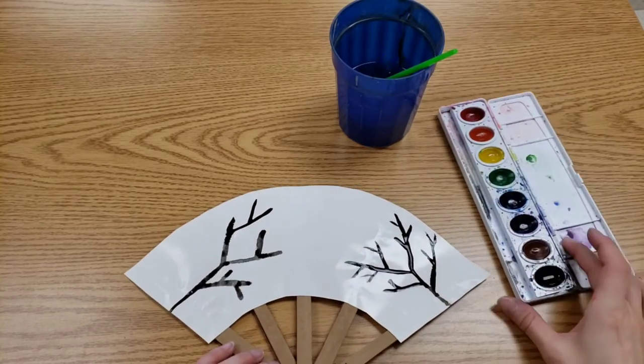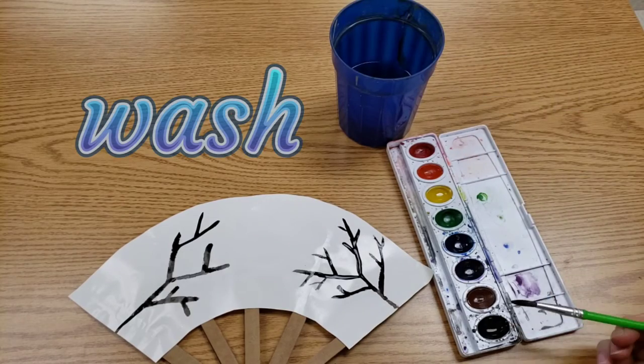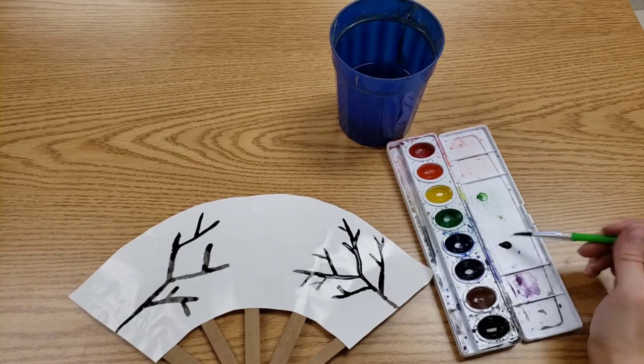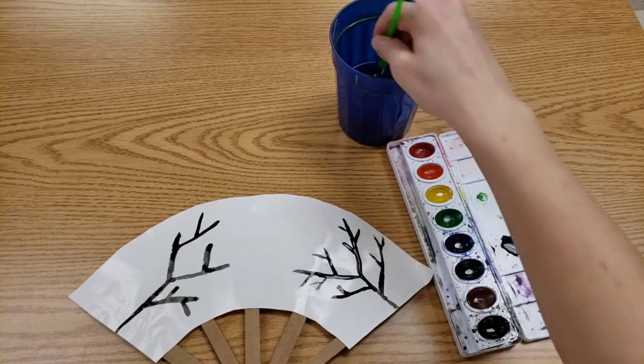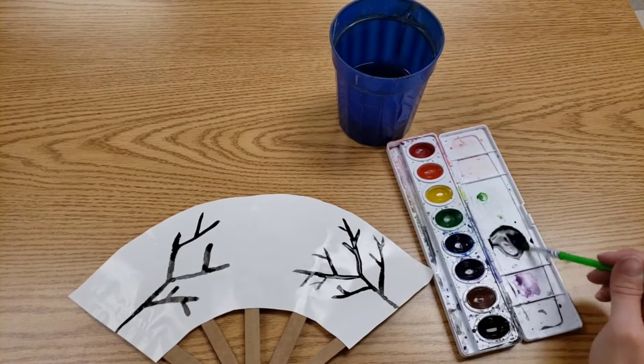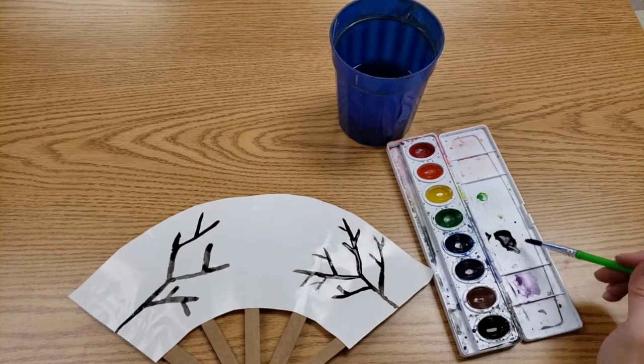Now we're also going to learn how to make a wash. That's where we take some of your black, we're going to put it in your lid, and then we add water. What this is doing is it's making that black lighter.